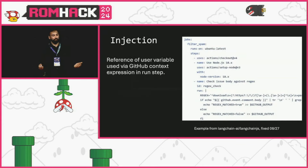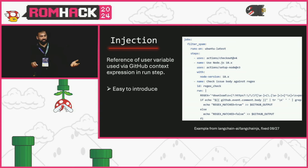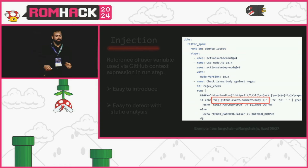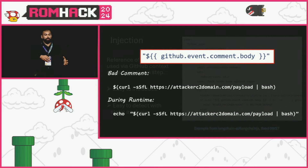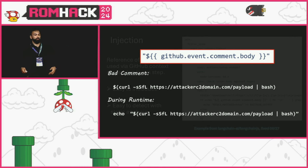The first vulnerability class is injection. This has been around as long as GitHub Actions has been around, and it's easy for developers to introduce because writing workflows this way is the path of least resistance. Because of that, it's also easy to identify with static analysis. In this case, a workflow has a run step referencing a comment body using a GitHub Actions context expression. When this runs, that comment is expanded into a temporary shell script that the runner executes — leading to arbitrary code execution if someone makes a malicious comment.